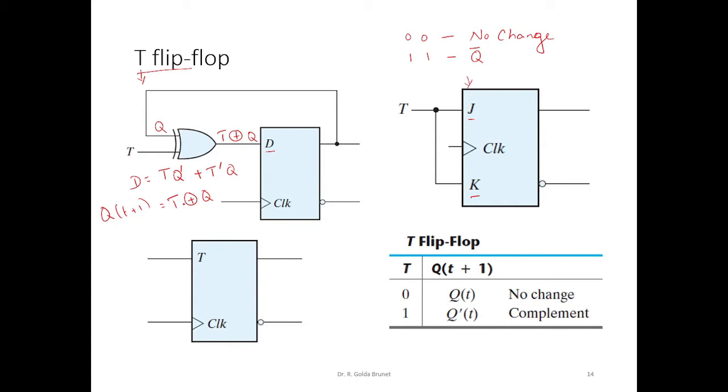Let us substitute the value of T here and see whether we are able to get this output. So, when T is equal to 0, this term becomes 0 and what we get is T bar is 1 and therefore, we get Q as output and that Q is fed as input to D at time T and that is what we will observe at time T plus 1 and therefore, it is a no change state.